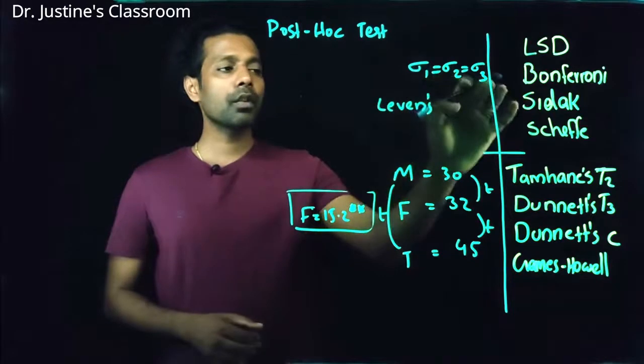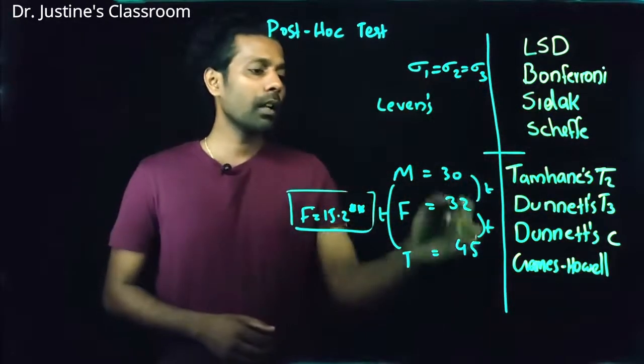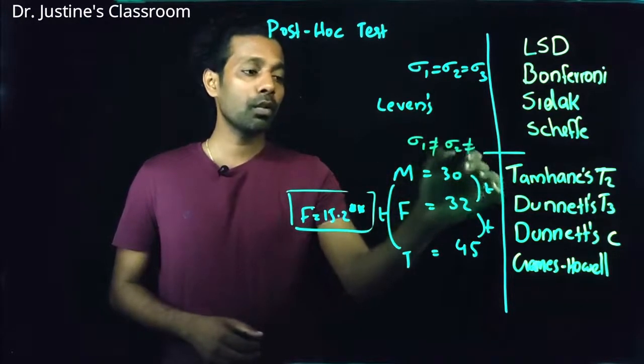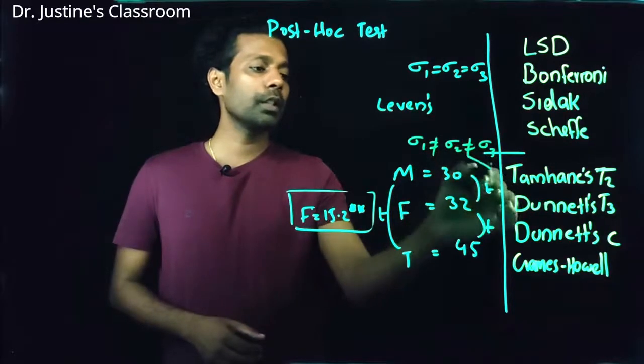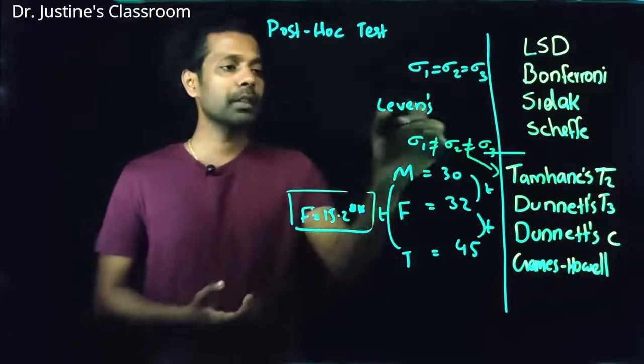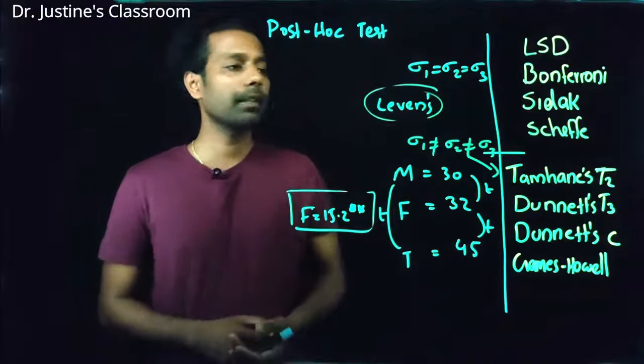If standard deviations of these groups are equal, this set of tests can be done. Otherwise, when the standard deviation of first group not equal to standard deviation of this one, you generally go for these set of statistical methods. So based on this test, you can decide which area has to be gone first level itself.